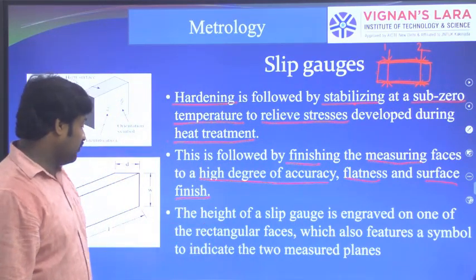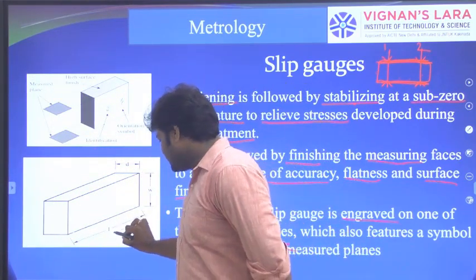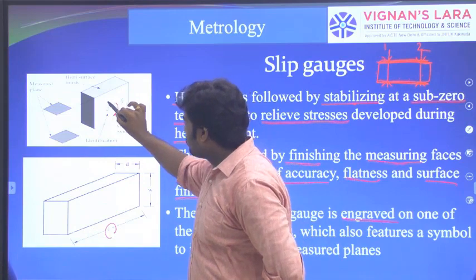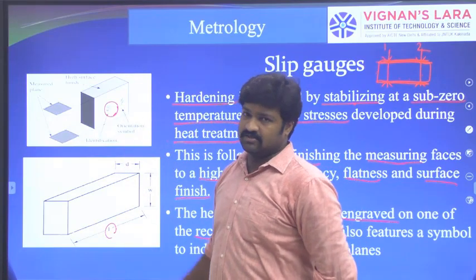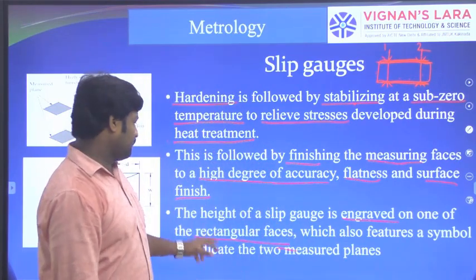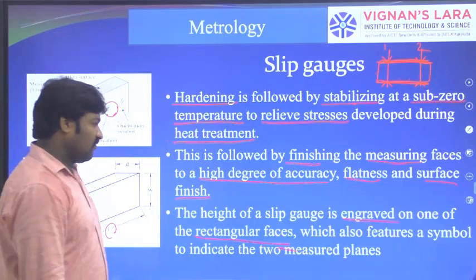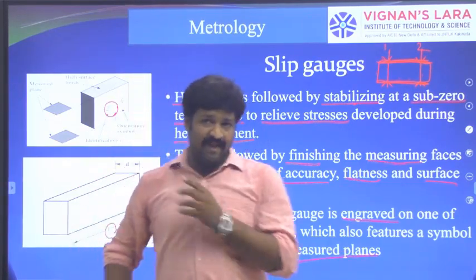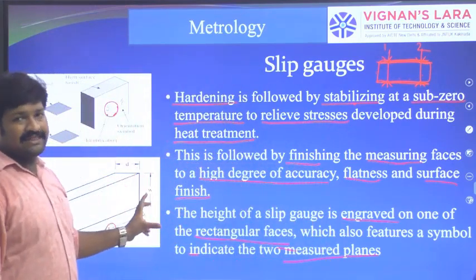The height of the slip gauge is engraved on one of its rectangular faces. Since the length varies from block to block, the length — or height — of each slip gauge is marked on one of its surfaces. For example, a block may be marked as '5' for its 5 mm length. The engraving on the rectangular face also features a symbol to indicate the two measuring planes.